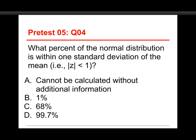Alright, number 4, what percent of the normal distribution is within one standard deviation of the mean? That is, the absolute value of z, that's what those vertical bars mean, it's an absolute value. The absolute value of z is less than 1. Another way to write it is, it goes from negative 1 to 0 to positive 1. And the choices are: A. cannot be calculated without additional information, B. 1%, C. 68%, or D. 99.7%. The answer is 68%.